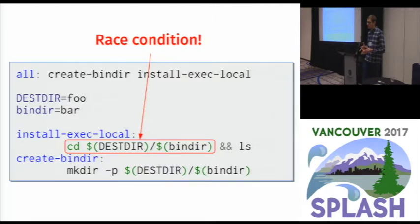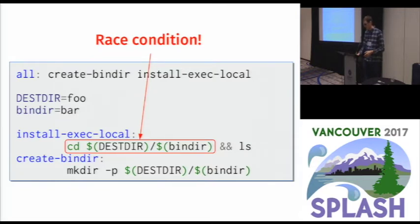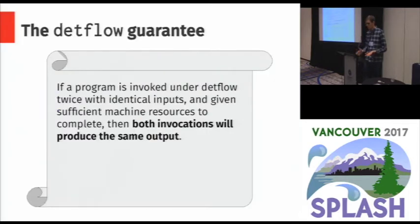We'd like to have some way of erroring deterministically at runtime if we try to execute a bad makefile like this. And this is what motivated us to develop this tool that we call DevFlow for doing things deterministically.